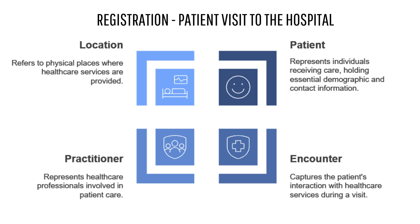So now you've checked in and you're probably headed to triage, where they take your vitals. A nurse is going to check your temperature, blood pressure, heart rate — the usual suspects. And FHIR is capturing all of that in a structured way, so no matter where you go in the hospital, that information is available. How does FHIR know who's taking those measurements, like who the nurse is?